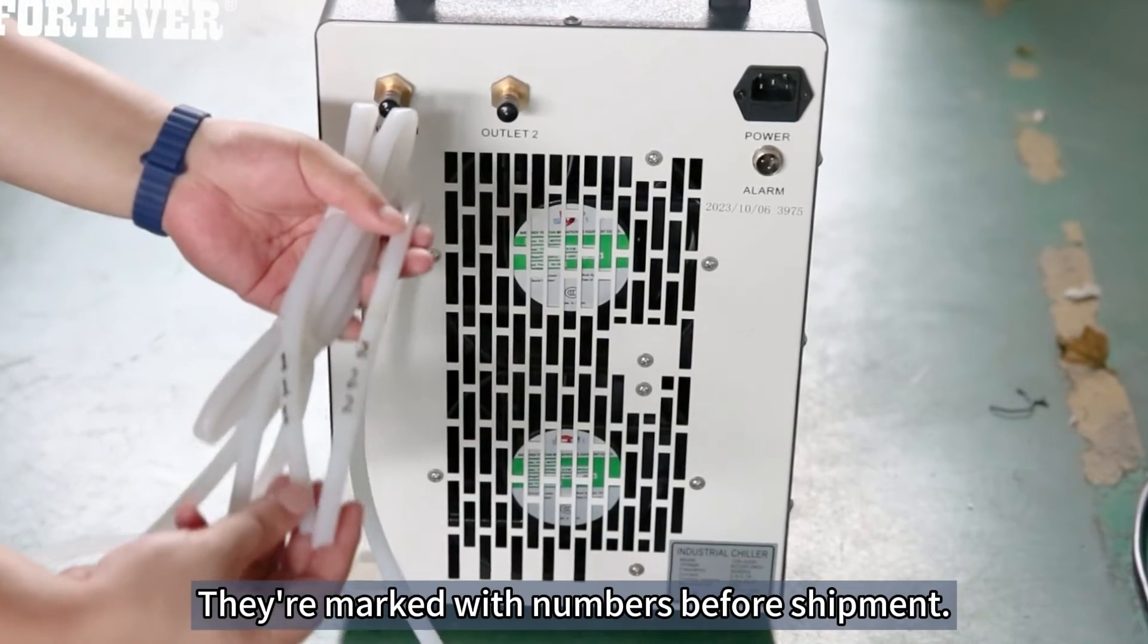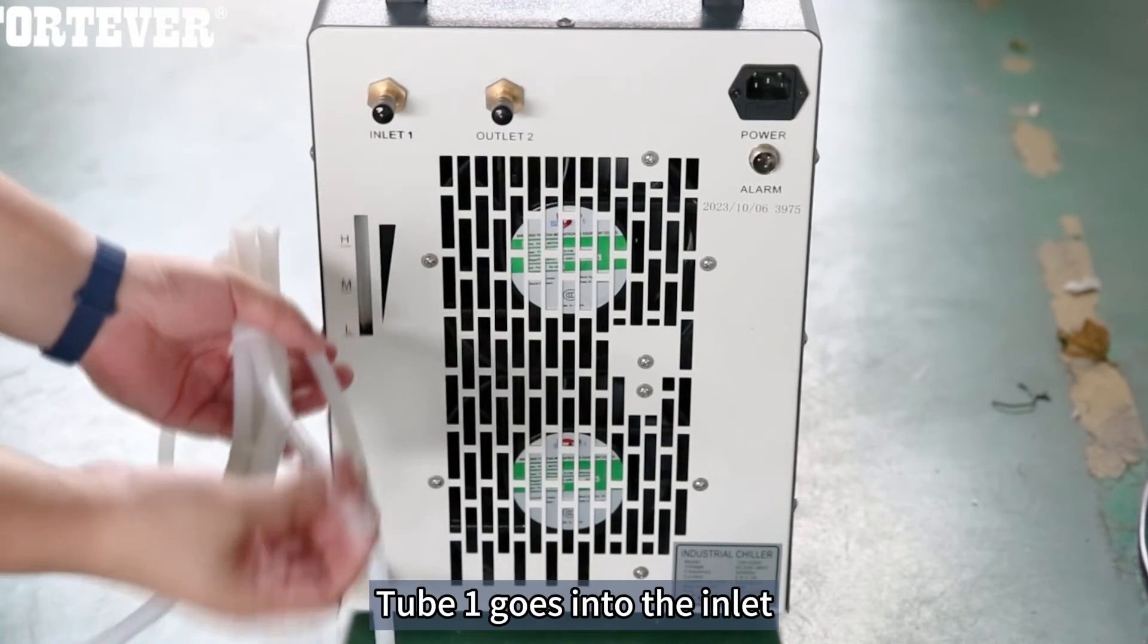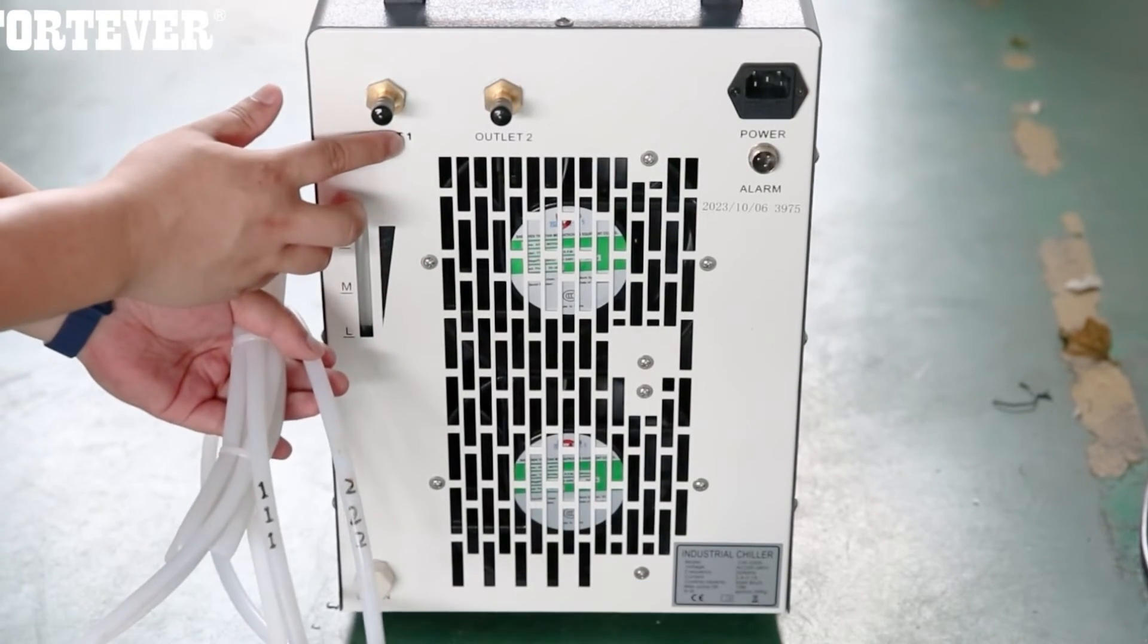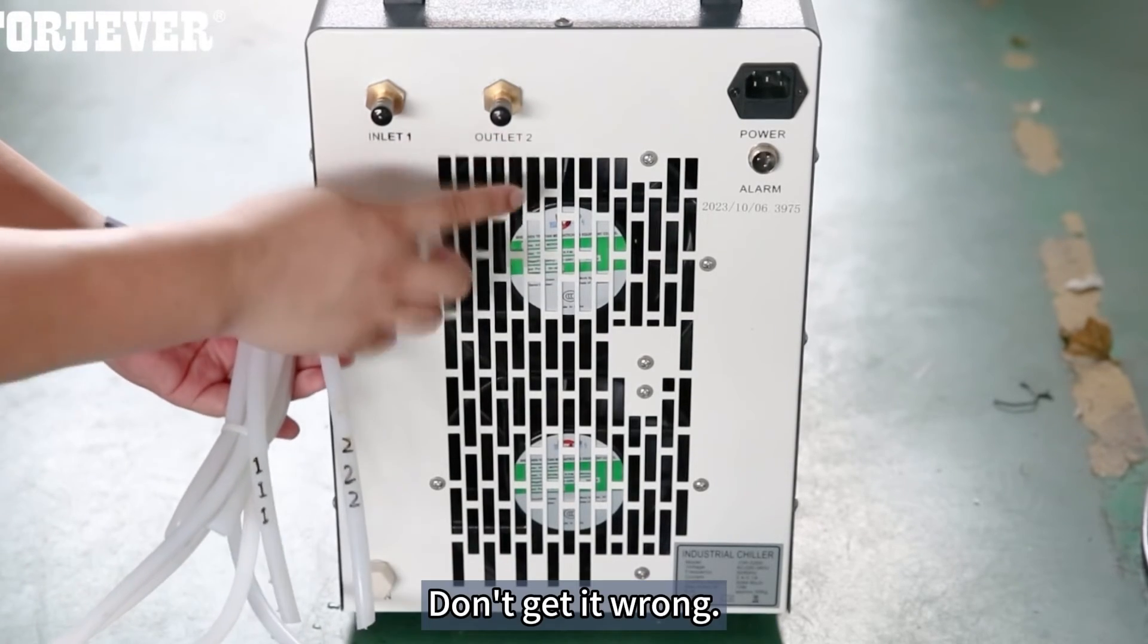They're marked with numbers before shipment. Tube one goes into the inlet. Tube two goes in the outlet. Don't get it wrong.